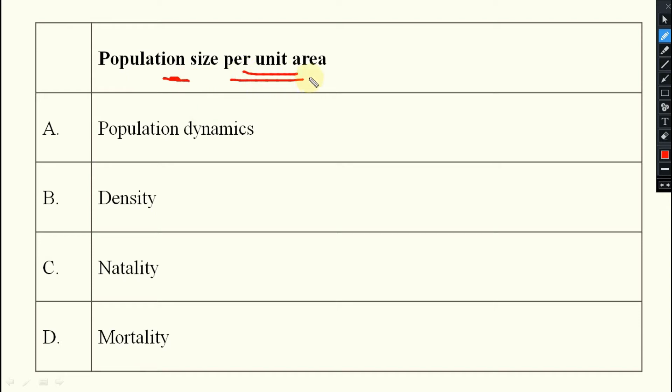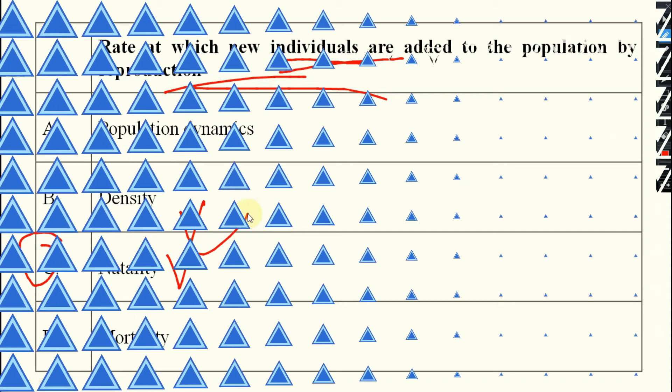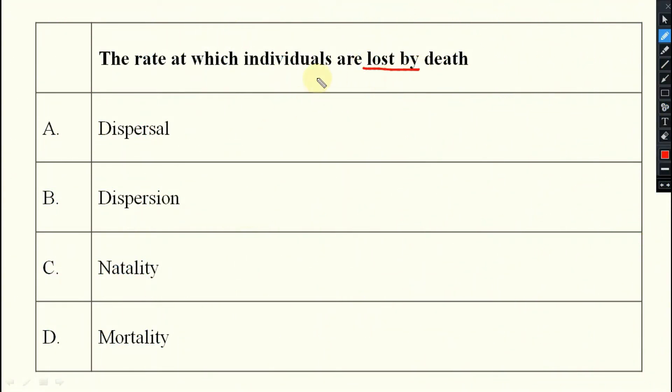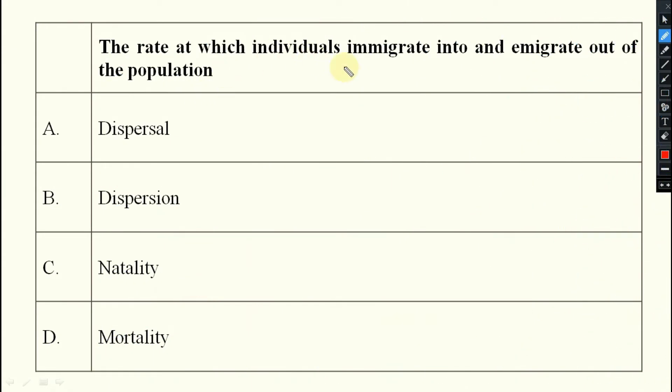Population size per unit area is known as your population density. Rate at which new individuals are added to the population by reproduction, that is known as your birth rate, that is your natality. The rate at which individuals are lost by death, that is known as your mortality.